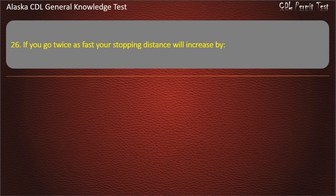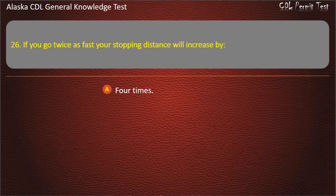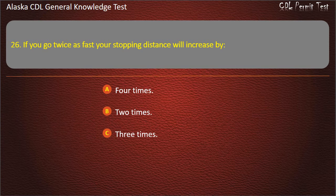Question 26. If you go twice as fast, your stopping distance will increase by 3 times, 4 times, or 2 times. Answer: 4 times.